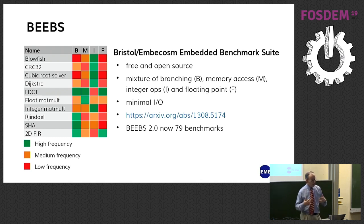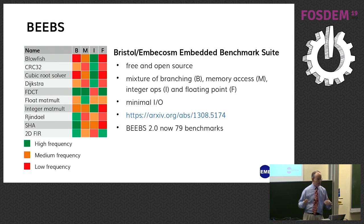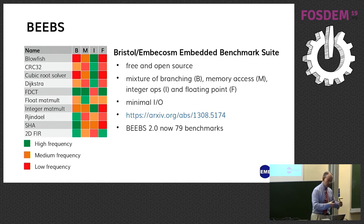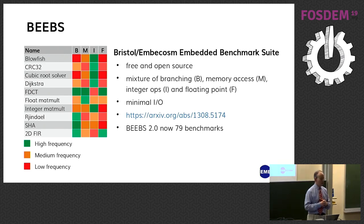It was originally just 10 programs, shown in the table on the left, color-coded according to how much work they do — reflecting different types of operations. BEEBS version 2 now has 79 benchmarks, and I've got a task to reproduce that table for all 79 benchmarks to show that we've still got a good mix of programs.